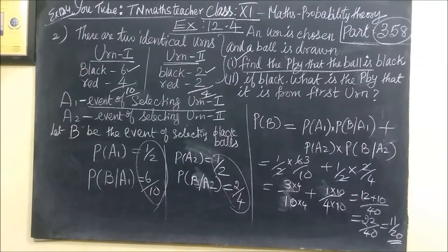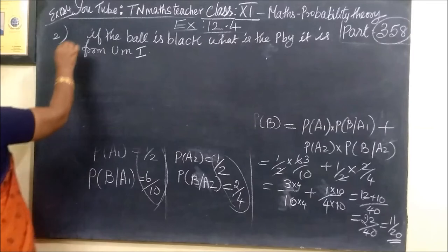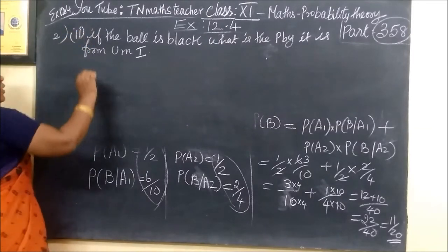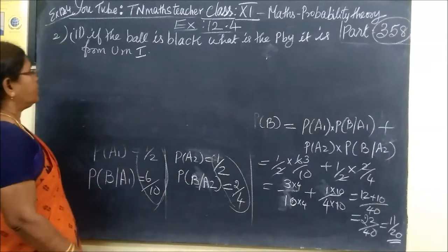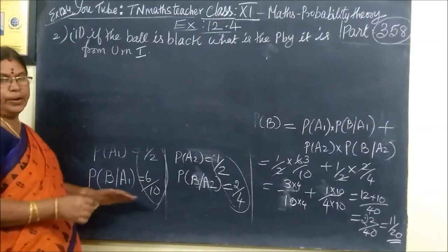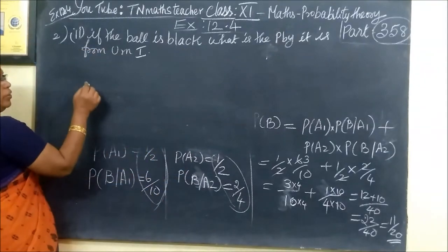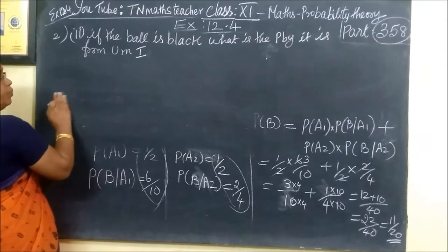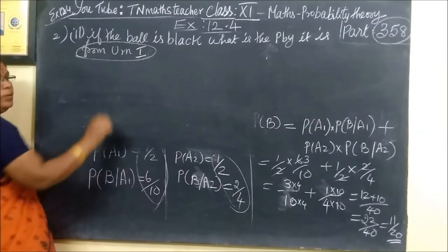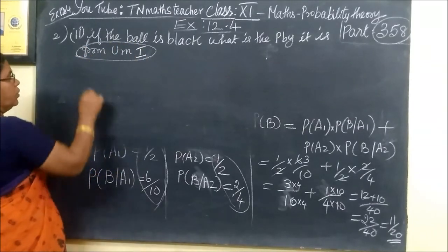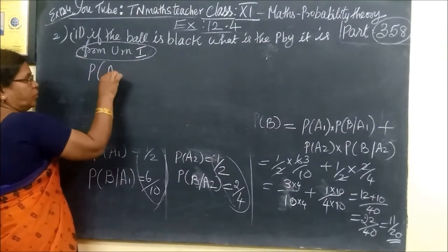Now come to the second question. If the ball drawn is black, what is the probability that it is from Urn 1? We are using Bayes' theorem here. This is the second part where, given a black ball, we find the probability it came from Urn 1.